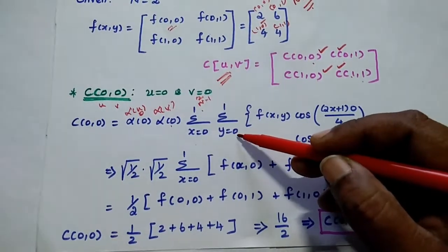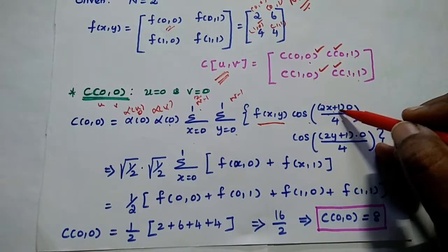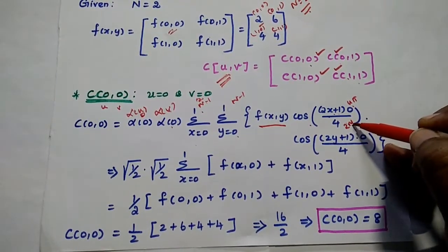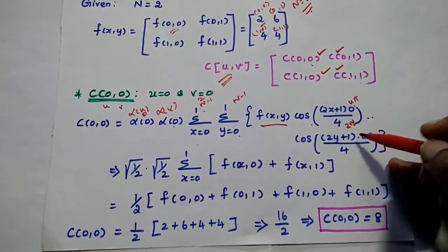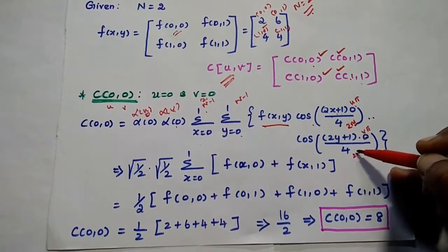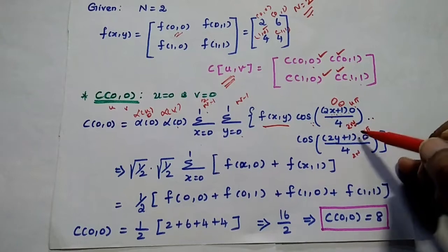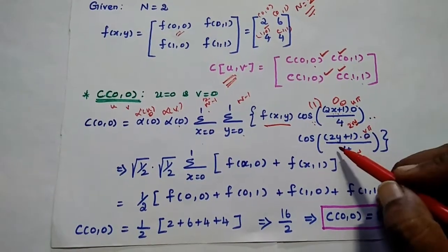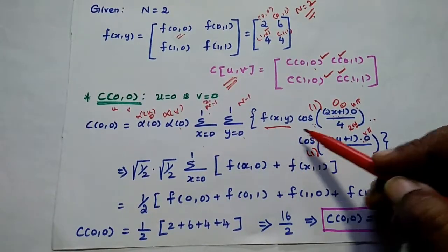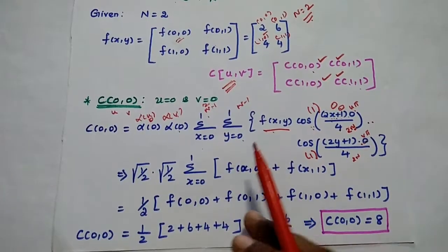Since n=2, n−1=1 for both summations. Since u=0, the term (2x+1)·0 becomes 0, and cos(0)=1. Similarly, since v=0, the term (2y+1)·0 becomes 0, and cos(0)=1. So inside the summation we are left with only f(x,y), since both cosine values are 1.